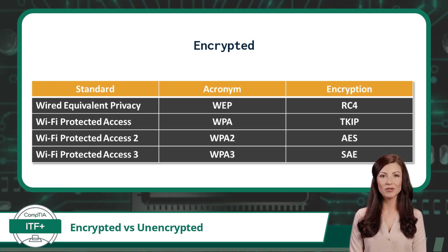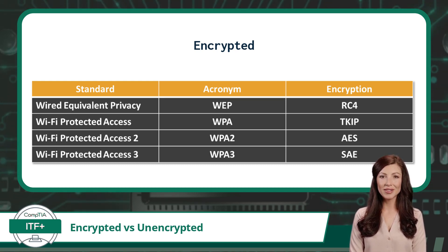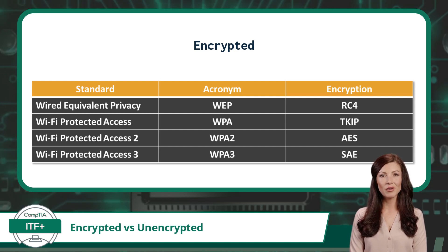Next, we have WPA, or Wi-Fi Protected Access. WPA was an improvement over WEP and offered better security. It used a more robust encryption mechanism known as TKIP, which made it a bit harder for attackers to break into your network. However, like WEP, WPA is also considered outdated and not the best choice for modern Wi-Fi security.